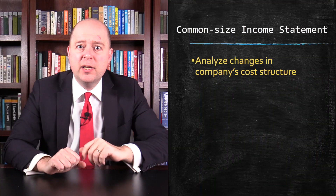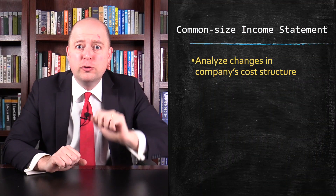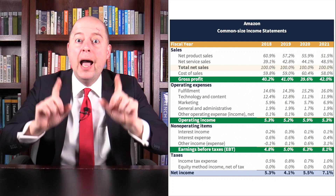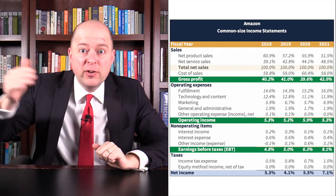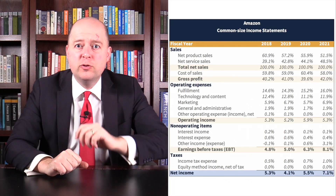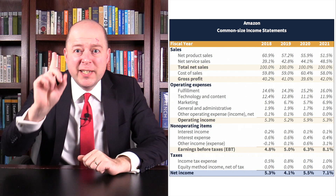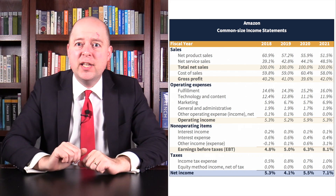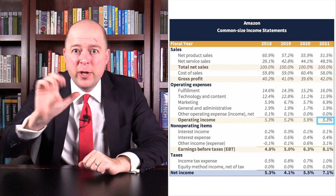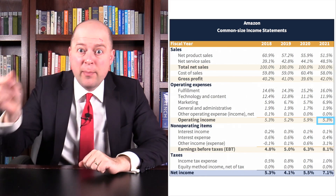The common-size income statement also shows you a company's margins — how much of every sales dollar became profit. In 2021, every dollar of net sales for Amazon generated 5.3 cents of operating income.